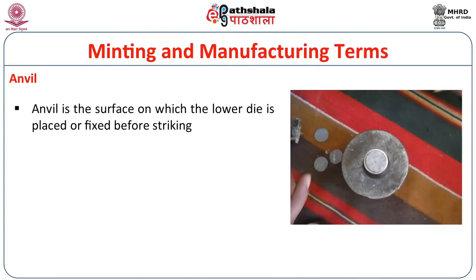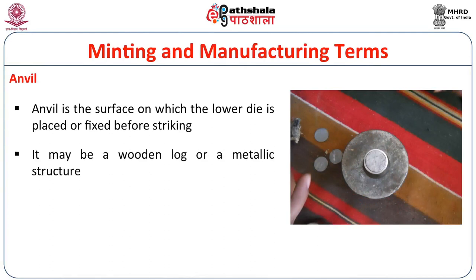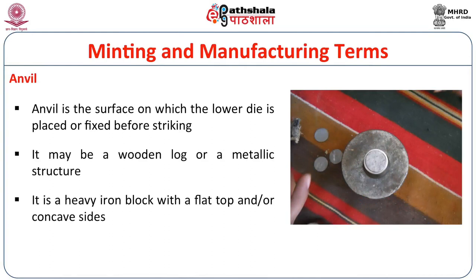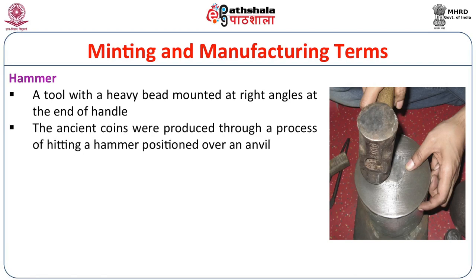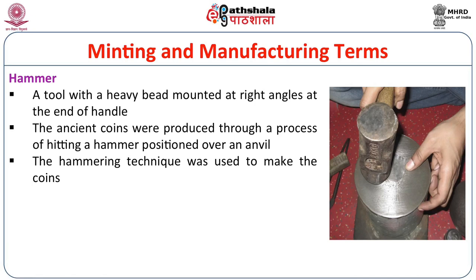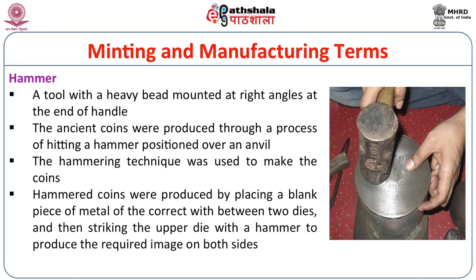An anvil is the surface on which the lower die is placed before striking — a heavy iron block with a flat top, which may be wooden or metallic. A hammer is a tool with a heavy head mounted at right angles at the end of a handle. Ancient coins were produced by placing a blank piece of metal between two dies and striking the upper die with a hammer to produce the required image on both sides.